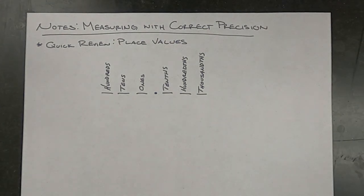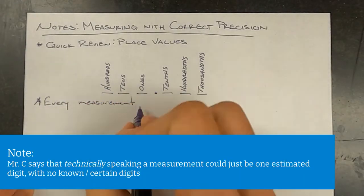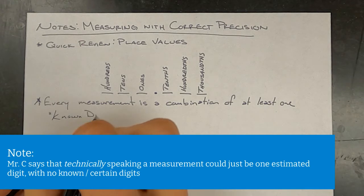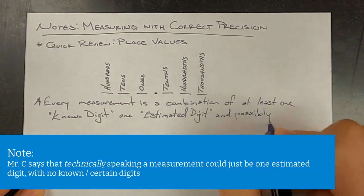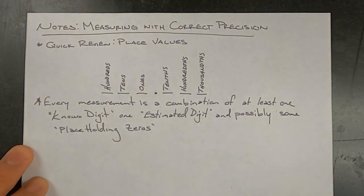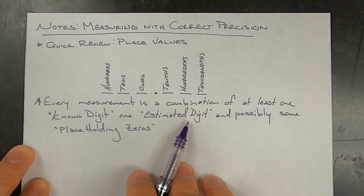So the concept that we're going to look at is that every measurement is really a combination of at least one known digit, one estimated digit, and possibly some placeholding zeros. Now I was careful when I said this, that it is one estimated digit, and only one. We'll see what that means when we look at some examples.